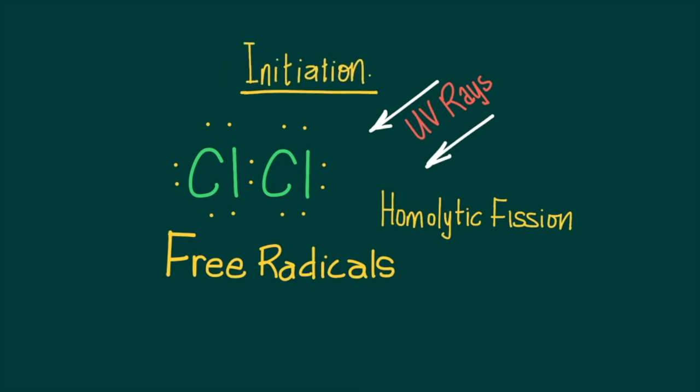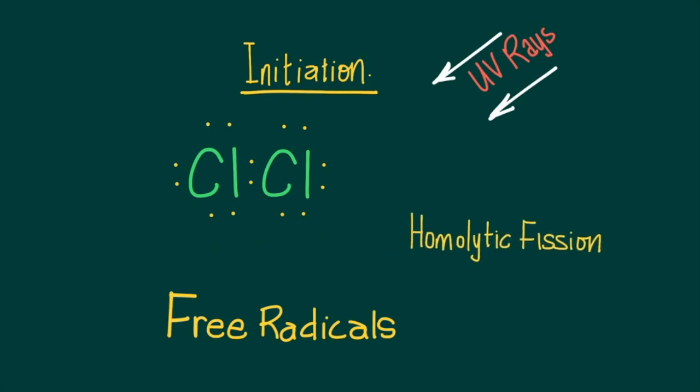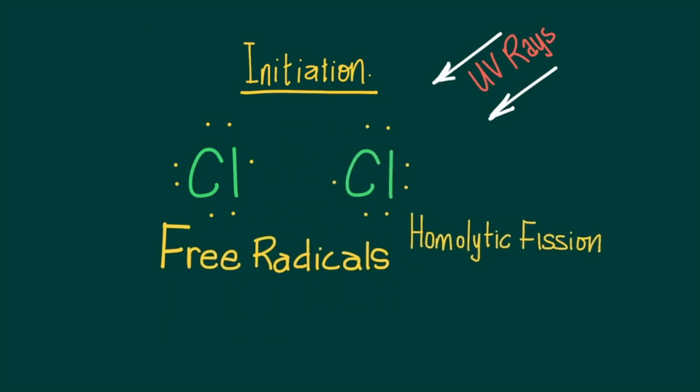So this part of the reaction is known as initiation. During initiation, ultraviolet radiation excites the chlorine-to-chlorine bond, allowing it to undergo fission, a homolytic fission, to produce chlorine free radicals.